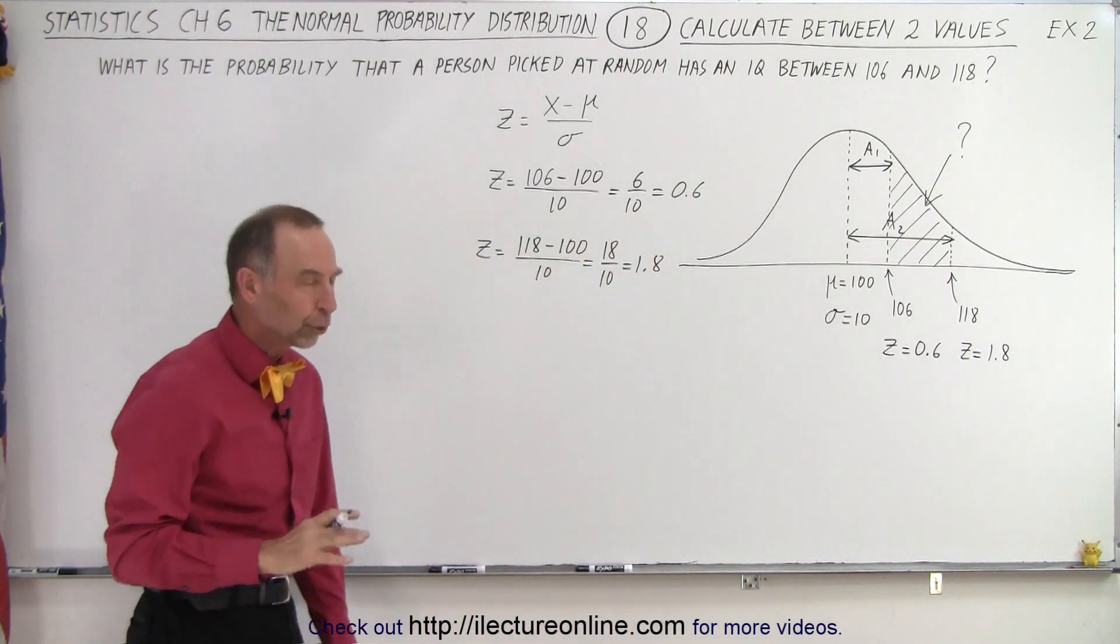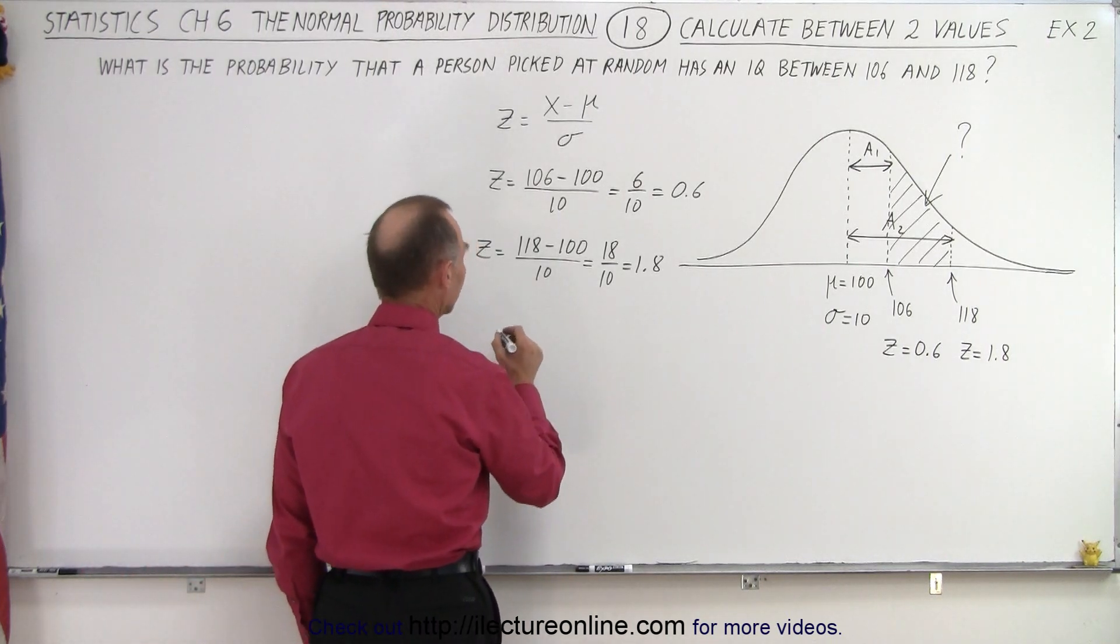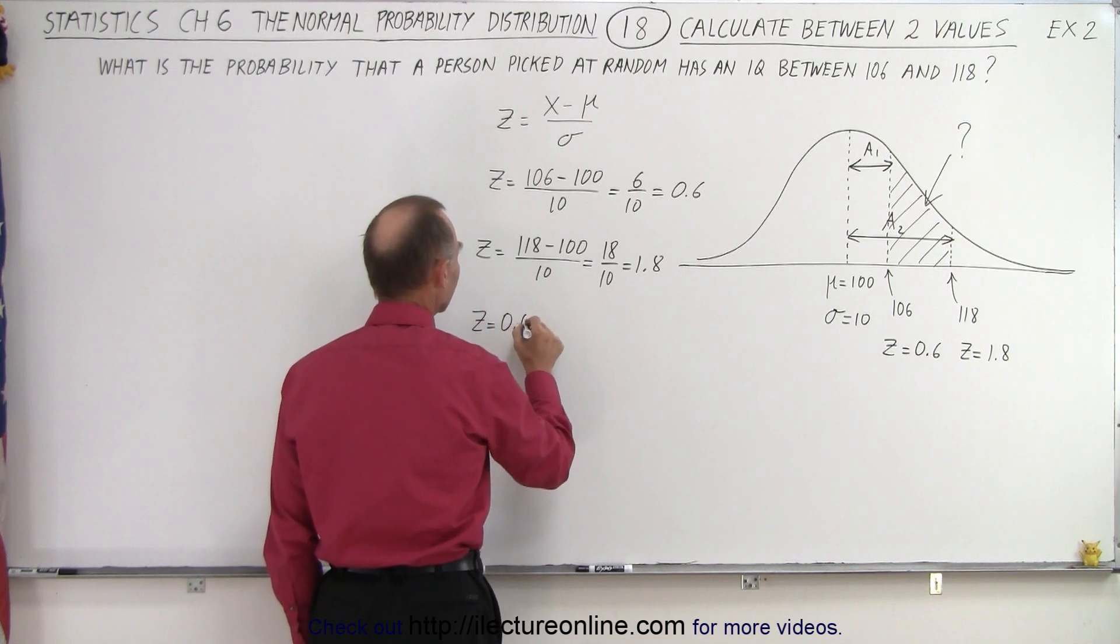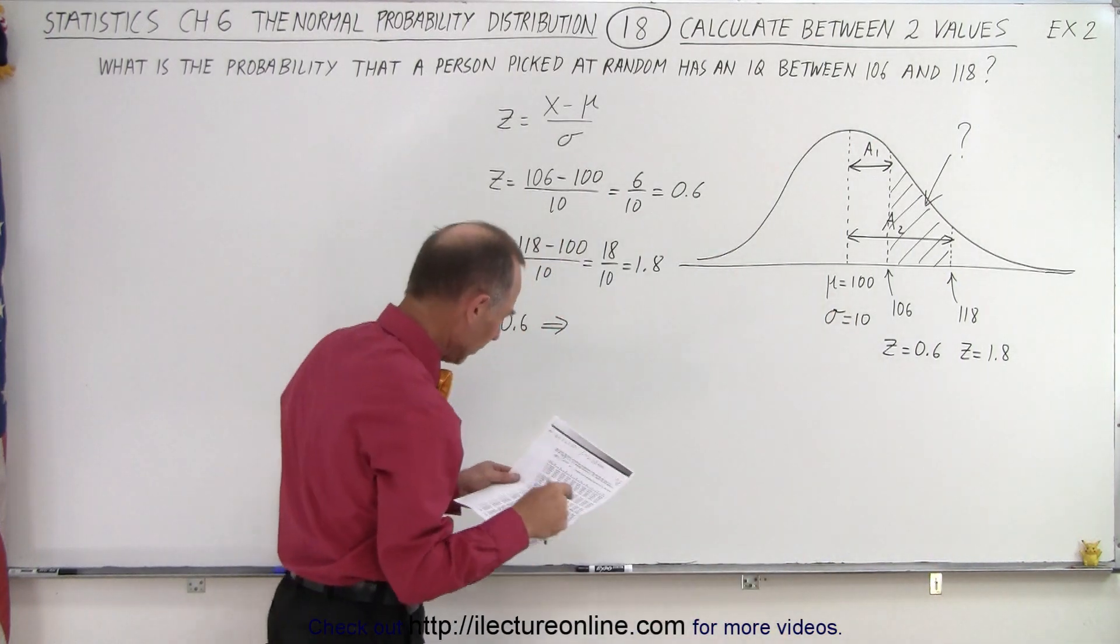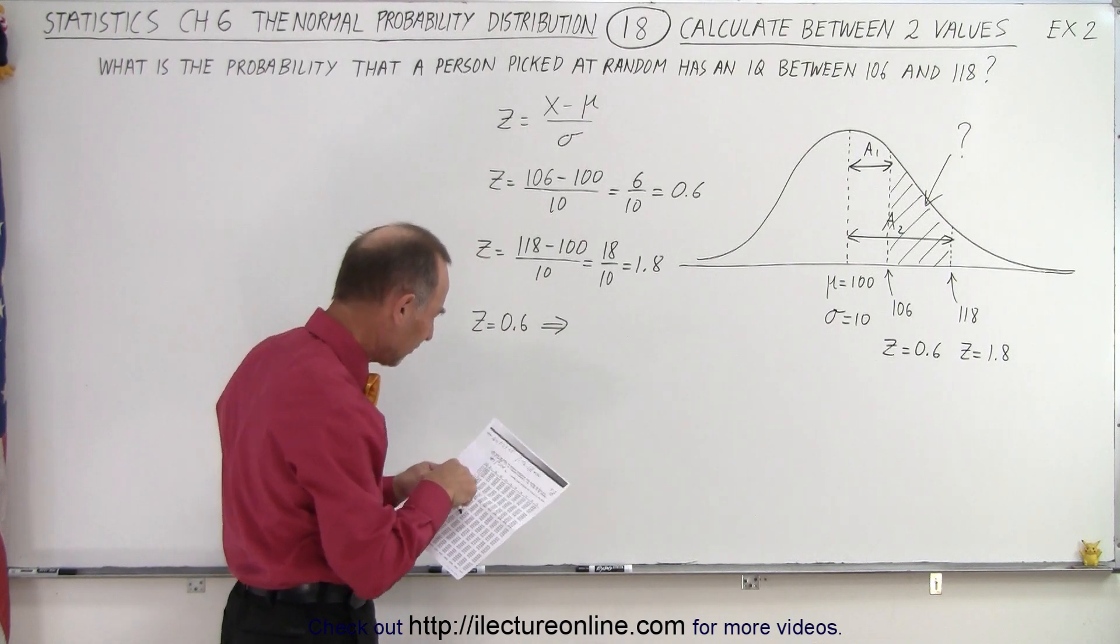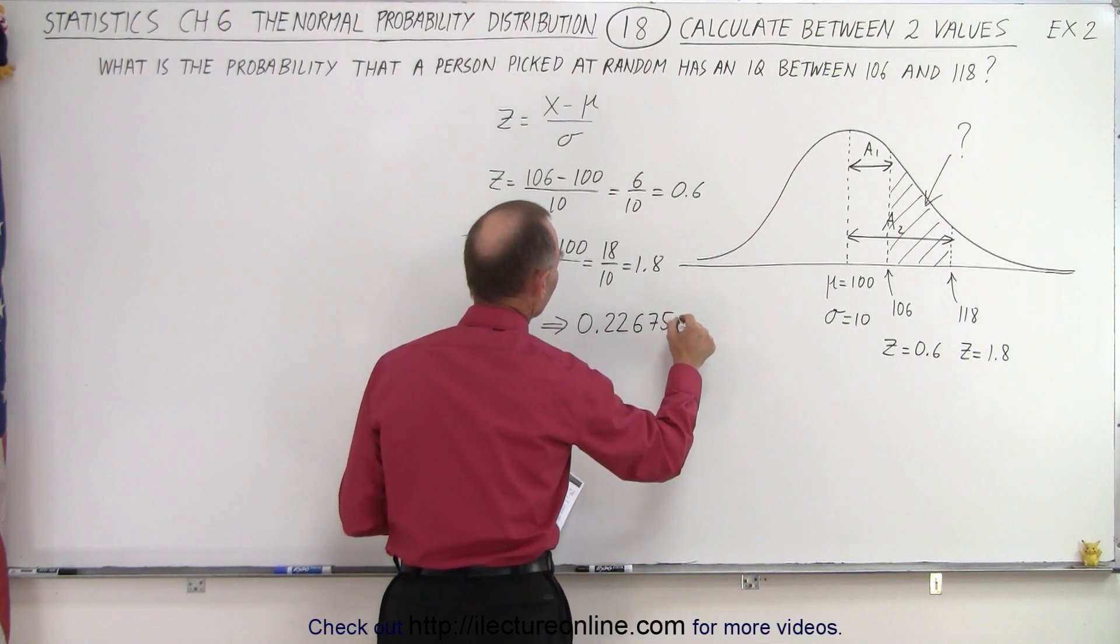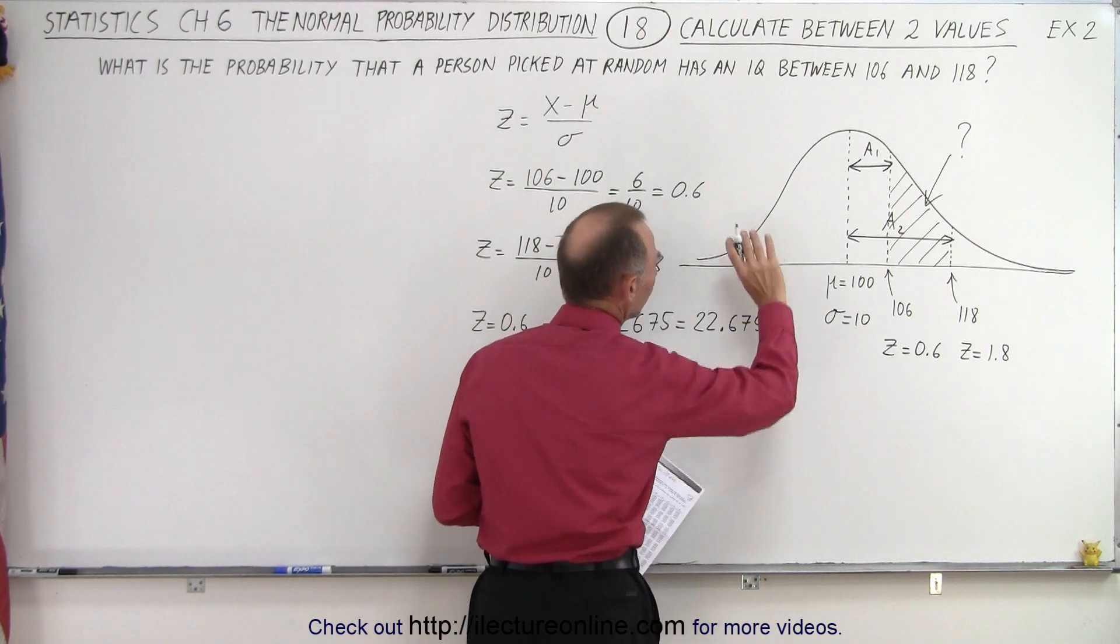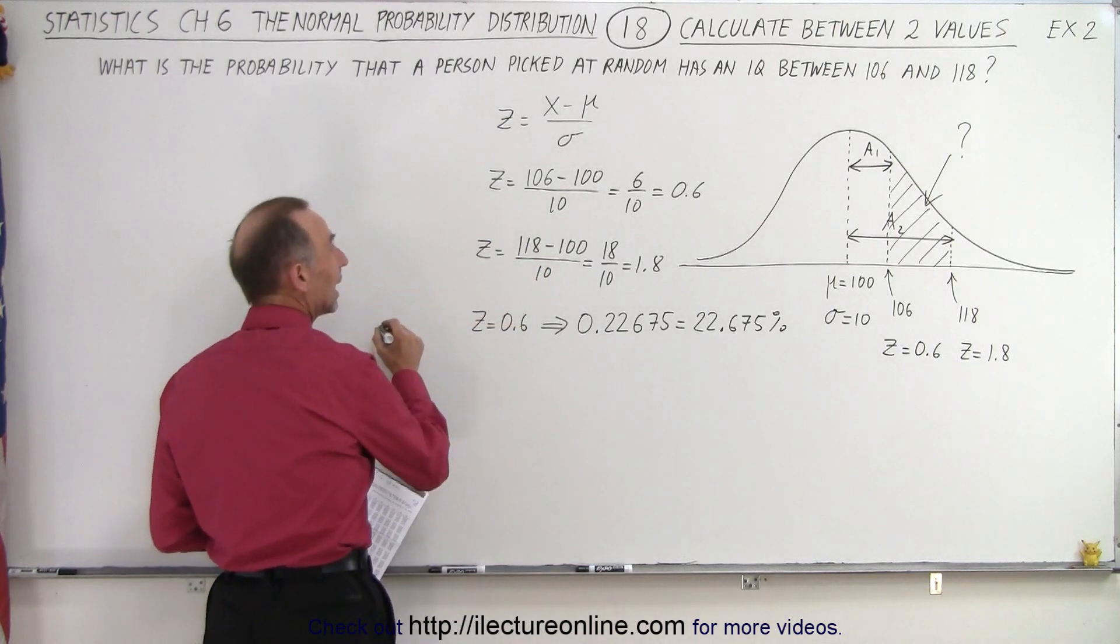So now we need to find the corresponding values, probability values or numbers that represent the area under the curve. So we can say that for z equals 0.6 that corresponds to a value of, we have to go look in our table. So 0.6 corresponds to a value of 0.22675, which is equal to 22.675 percent of the total area under the curve. So that corresponds to A1.